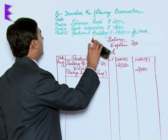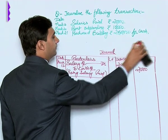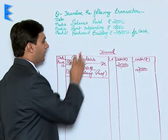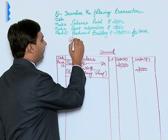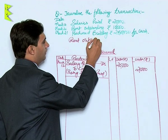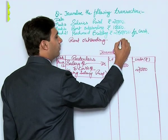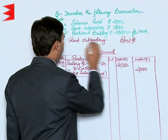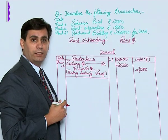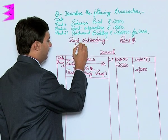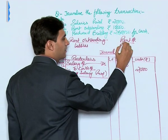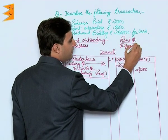The second transaction is on March 20th: rent outstanding rupees 10,000. There are two accounts involved — rent outstanding account and rent account. Rent outstanding means the rent has not yet been paid, so it comes under the category of liabilities. Rent is an expense, so it is categorized under the expenses classification.